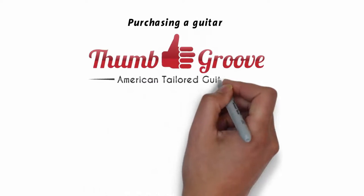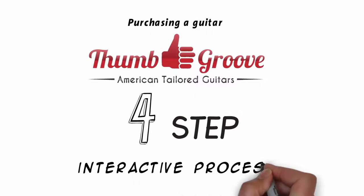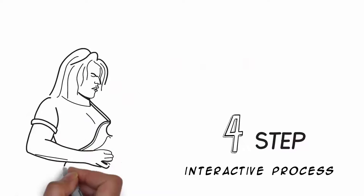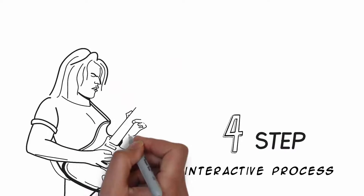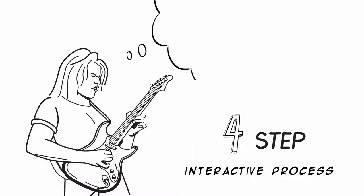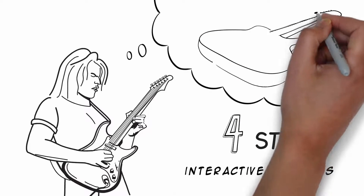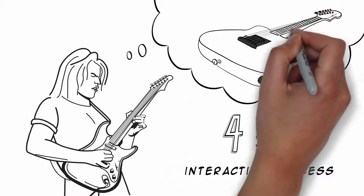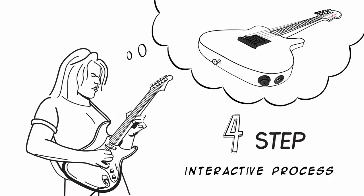Purchasing a guitar from Thumb Grooving is a four-step interactive process, designed to build an instrument that reflects your individual preferences as a musician. An experience that will create a guitar tailored to only one musician in the world: you.